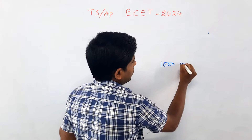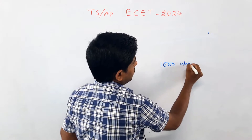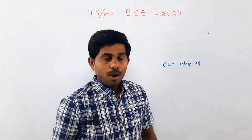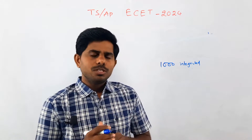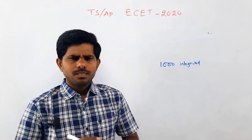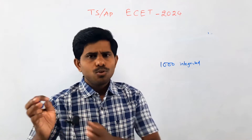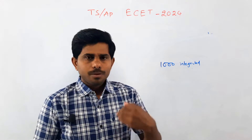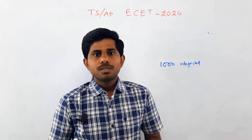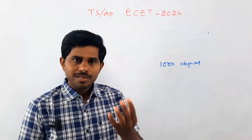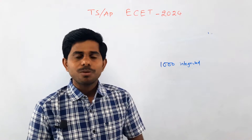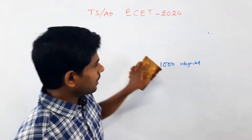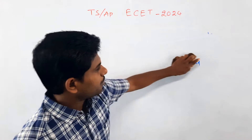1,000 integrator rank — what is the integrator rank? What is the branch rank? Then you have a lot of top colleges. You have nearly 1 lakh. 1,000 integrator below — you have 35,000 reimbursement. You have a remaining 65,000. You have to cut the code.